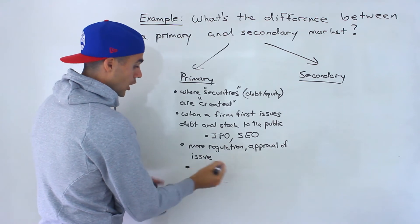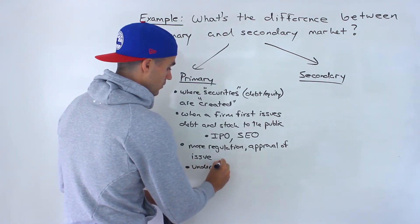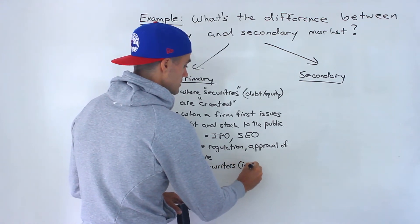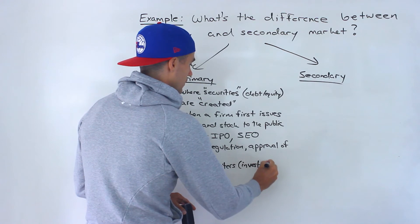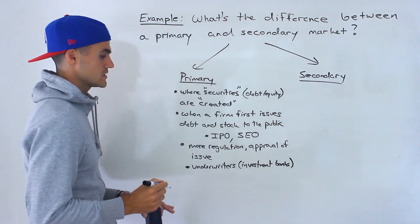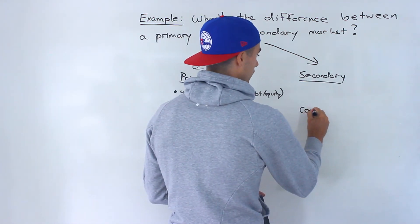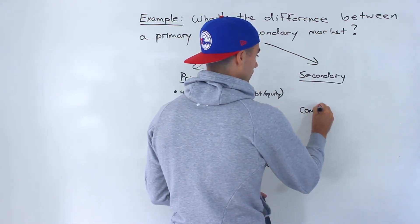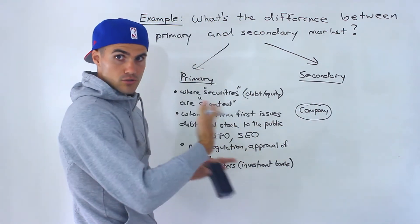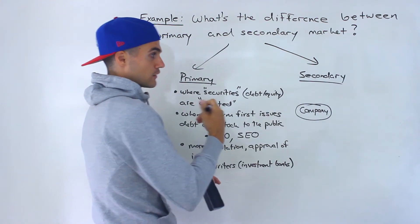So things get a little bit more complex in a primary market versus a secondary one. There are also underwriters involved, usually investment banks. We're going to cover all of this in future chapters in more detail, but just in general, what happens is you have a company — they want to go get funding — and so they're going to issue debt or stock and then get that funding from the public.